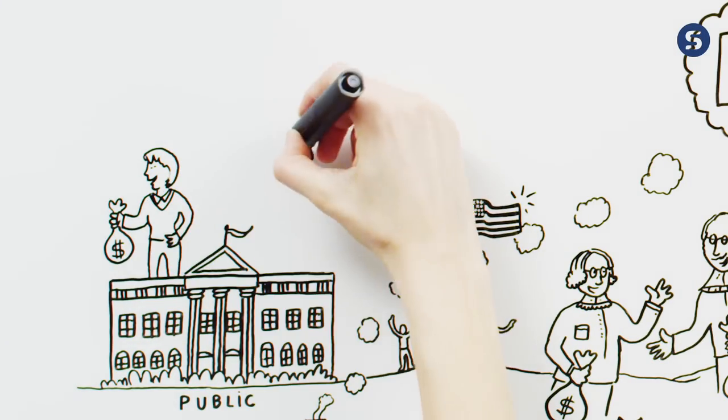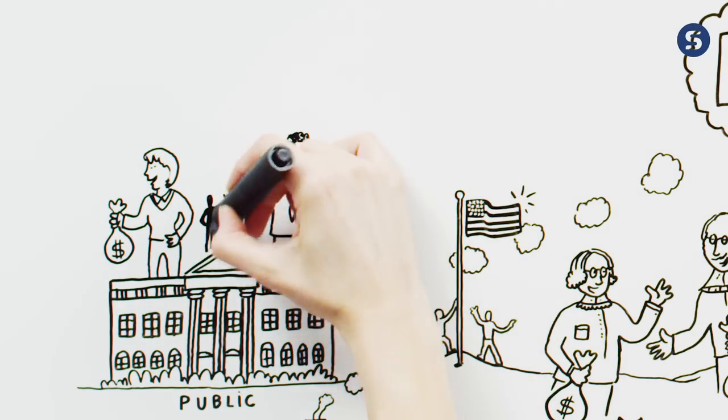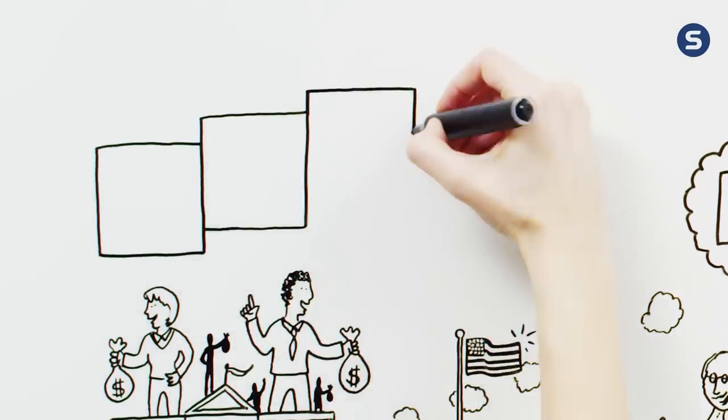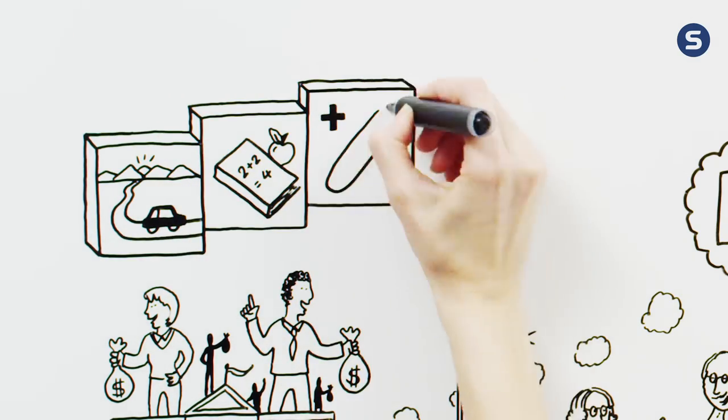Let's take it from the beginning and say that the government, which manages our tax money, decides to build a new road, school, or hospital.